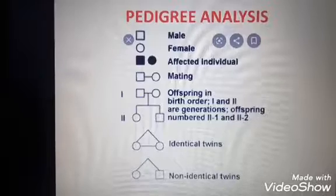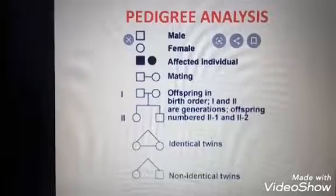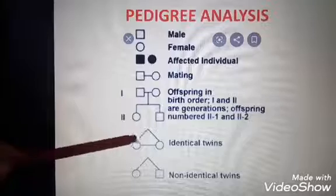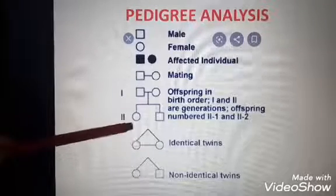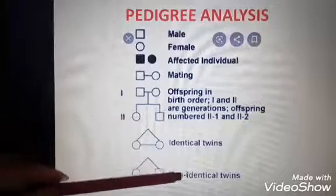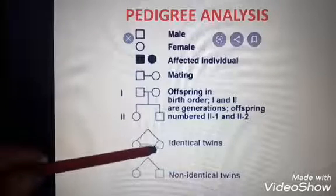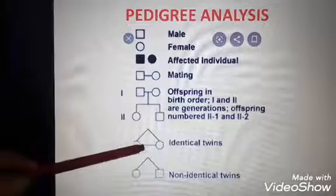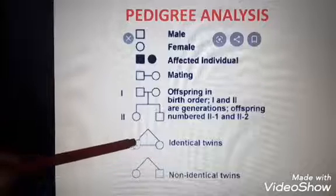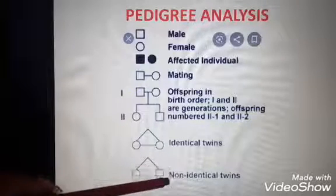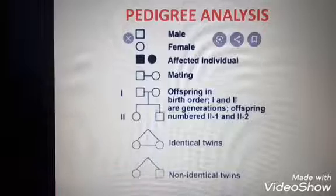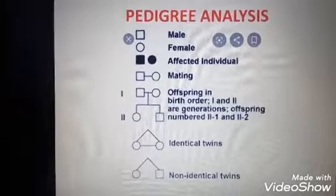In the case of identical twins, they are represented with a connected line between them. For non-identical twins, there are no connected lines between them. This symbol with no connecting line represents non-identical twins.